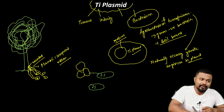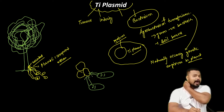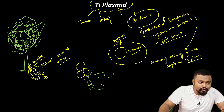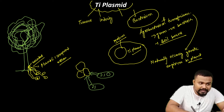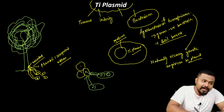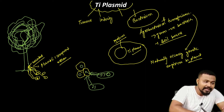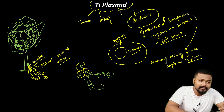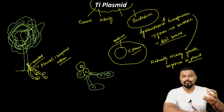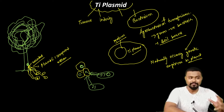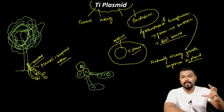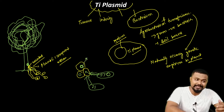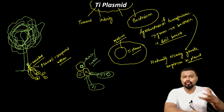Once attracted by the phenolic signals, the bacterium infects the wounded plant cell and transfers the Ti Plasmid. The T-DNA from the Ti Plasmid then drives the synthesis of auxin and cytokinin — plant growth hormones.